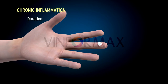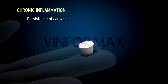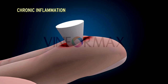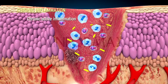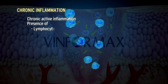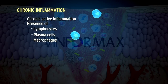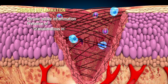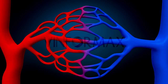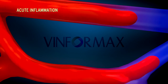The duration of chronic inflammation is longer and occurs after a delay. It may be due to the persistence of the causative agent of acute inflammation or due to a stimulus that induces chronic inflammation from the beginning. When there are acute exacerbations of chronic inflammation, it is called chronic active inflammation. The characteristic features of chronic inflammation are presence of chronic inflammatory cells such as lymphocytes, plasma cells and macrophages, presence of granulomatous inflammation, and granulation tissue formation.